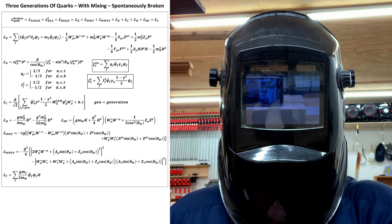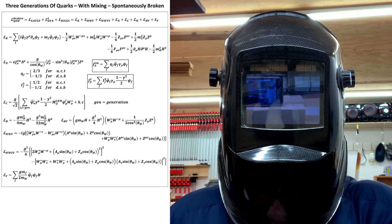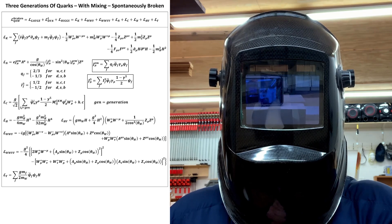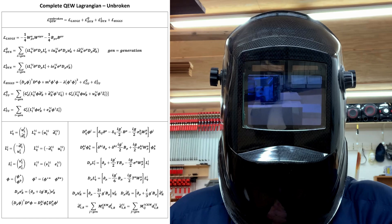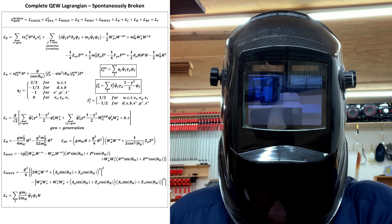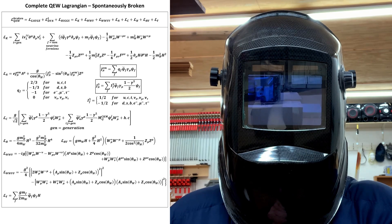As I said previously, all we need to do to stitch the two three generation theories together is identify the bosonic sectors with each other. Doing this gives us this unbroken complete QEW Lagrangian and this spontaneously broken complete QEW Lagrangian.